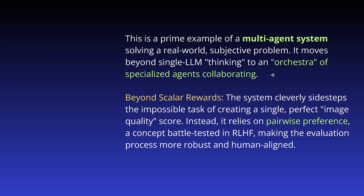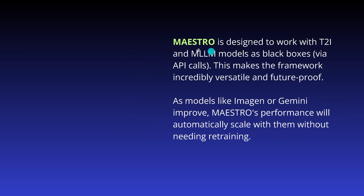Each agent has a real particular specialty. Also note that we go beyond what we know as a scalar reward function for reinforcement learning. Since we have so many agents, so many AI intelligences, we don't go with scalar reward functionalities but with a pairwise preference — LLM as a judge, or a vision language model as a judge. It's a beautiful idea: just work with any text-to-image and multimodal LLM models as black boxes. This is future proof. Of course they focus on their Imagen or Gemini projects — it is Google, after all.